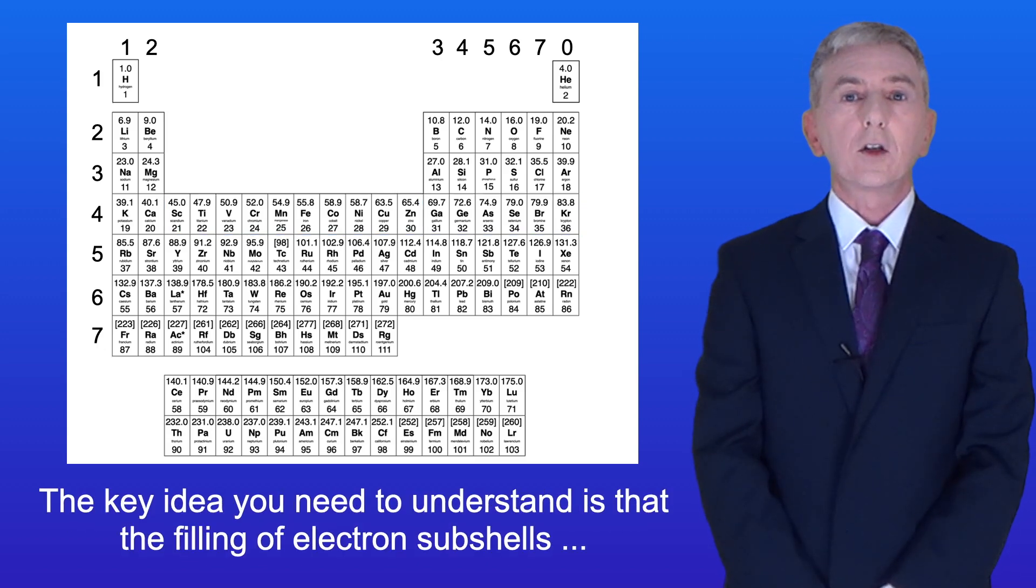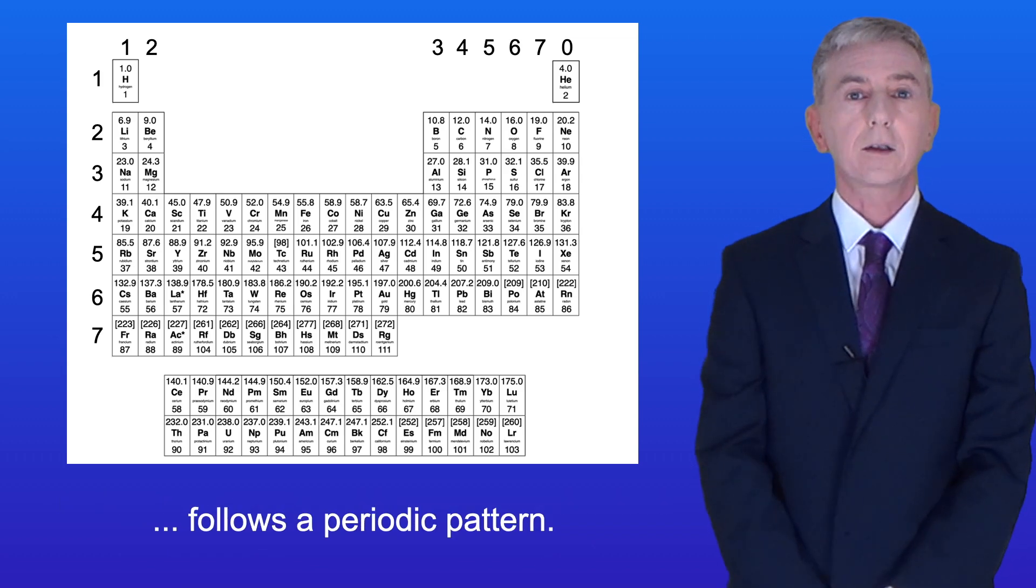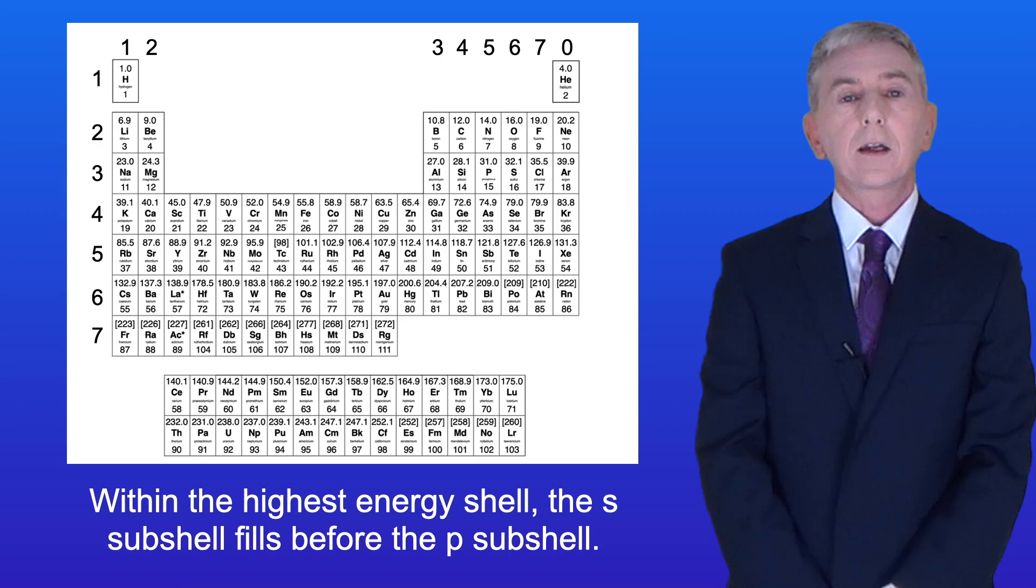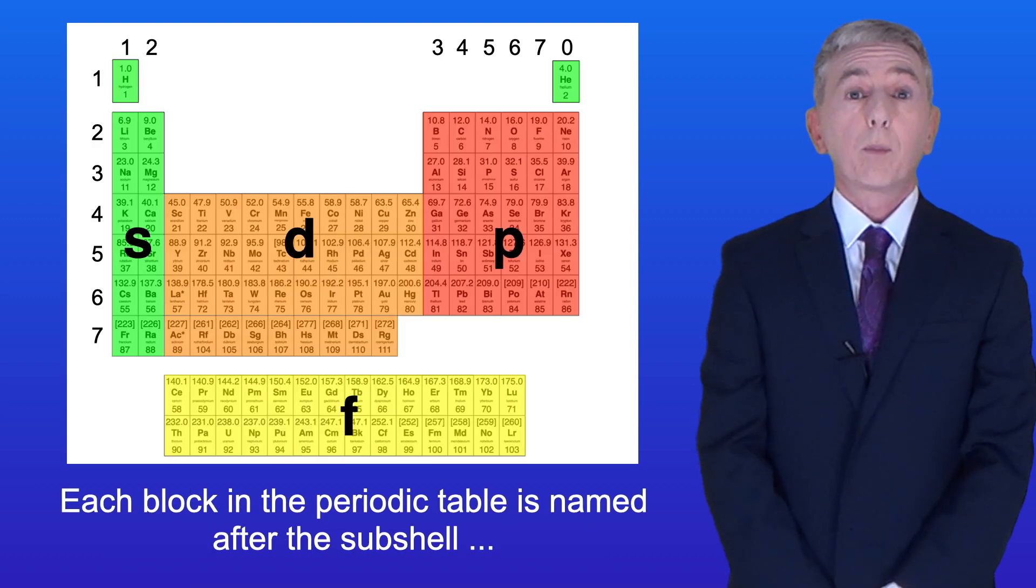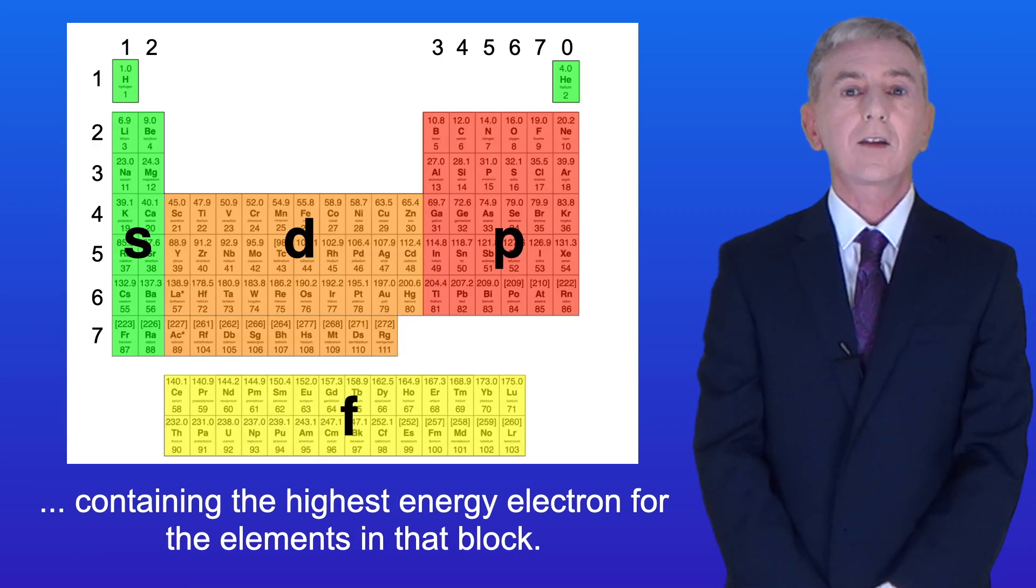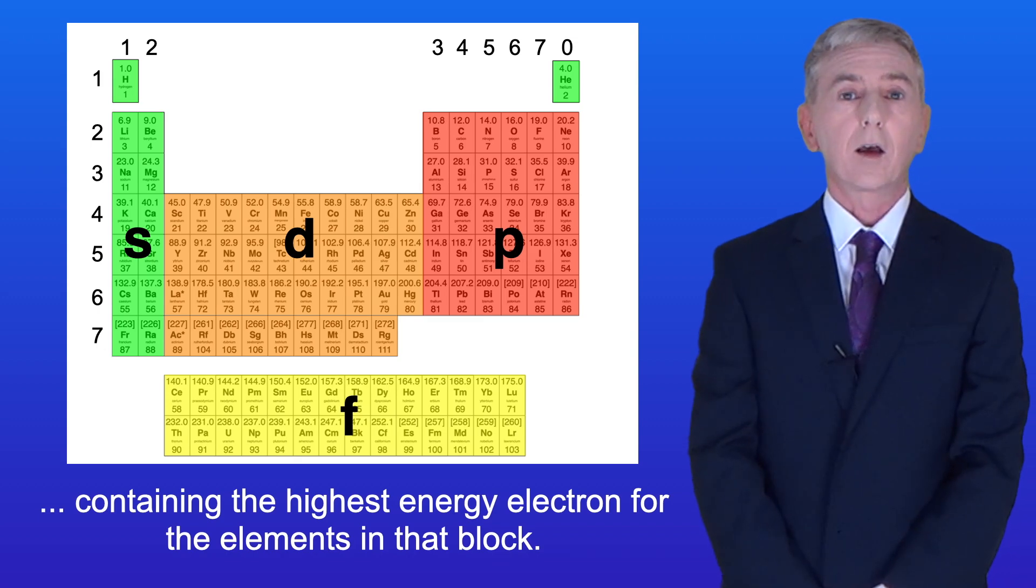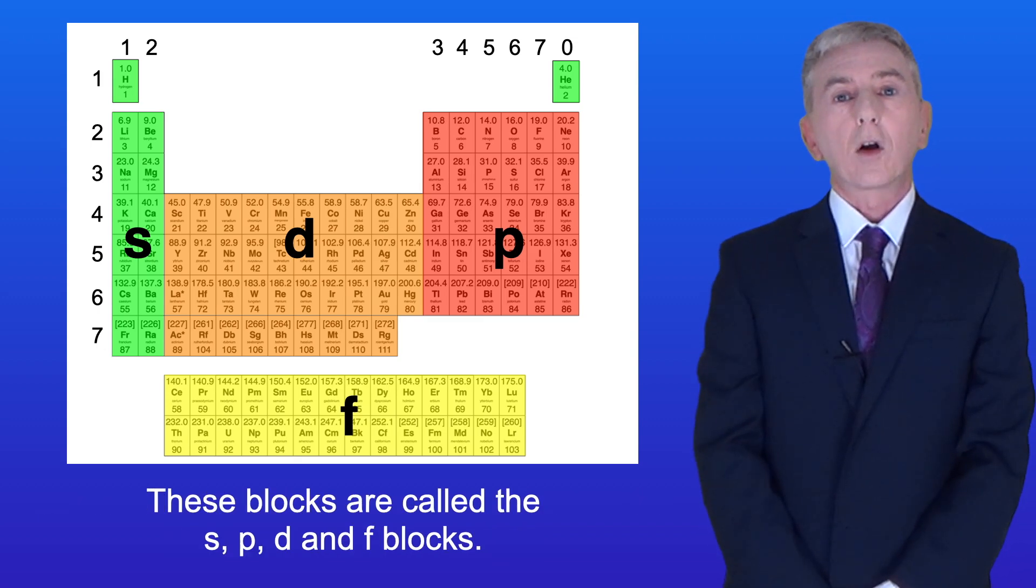So the key idea you need to understand is that the filling of electron subshells follows a periodic pattern. Within the highest energy shell, the s-subshell fills before the p-subshell. Each block in the periodic table is named after the subshell containing the highest energy electron for the elements in that block. So these blocks are called the s, p, d, and f blocks.